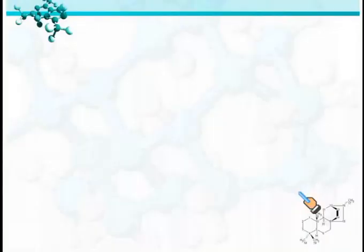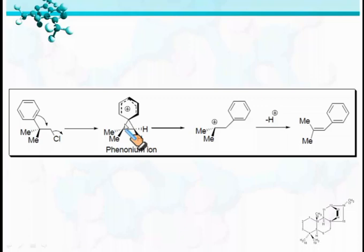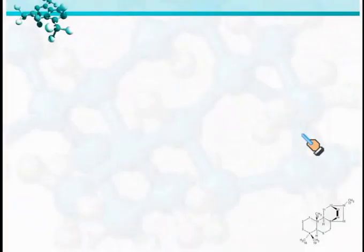When this compound is heated, it generates the following alkene. The reaction mechanism involves neighboring group participation, generating a phenonium ion. Then this bond breaks and generates a carbocation. The driving force is the gain of aromaticity of the benzene ring. Then loss of a proton takes place and generates this alkene.